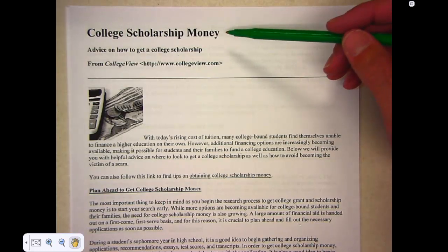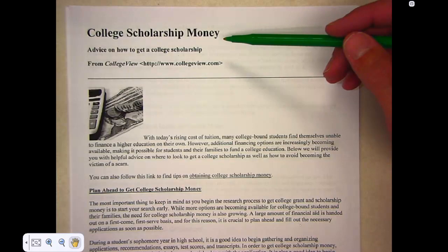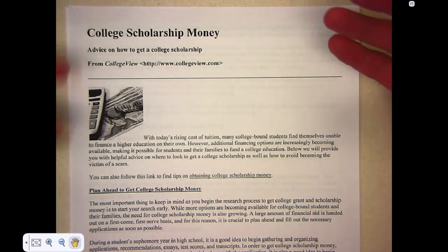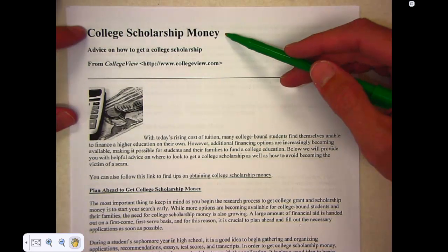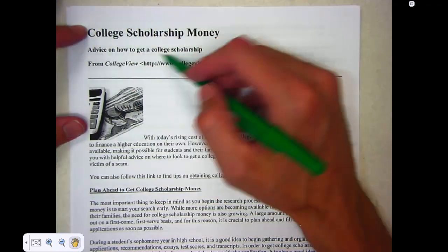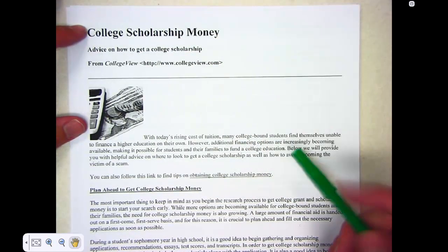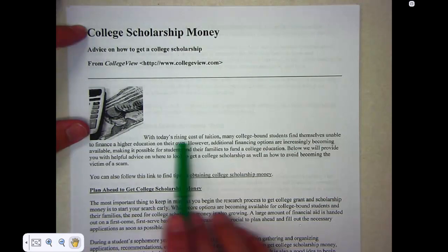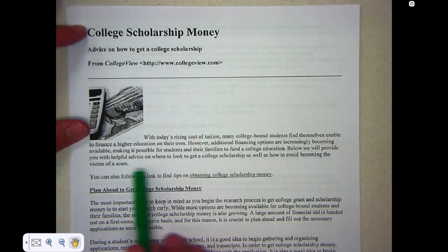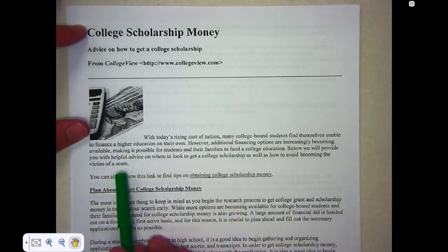We're going to pretend we're doing this reading as part of a research project on college readiness — how to get into college, how to find funding, how to pay for college, how to choose a college. As a student, I've chosen this article because it has a catchy title: 'College Scholarship Money,' with a subtitle 'Advice on How to Get a College Scholarship.' So I'm already making predictions. I'll skim and scan — they're talking about difficulties of paying for college, different options, and how to choose well.